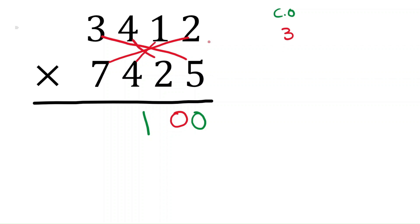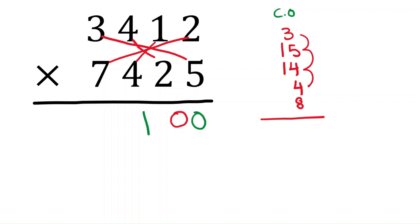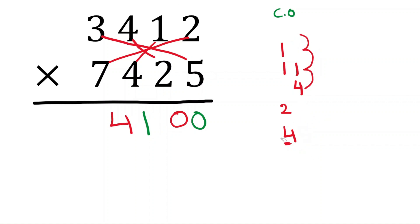Five times three is fifteen, two times seven is fourteen, four times one is four, and four times two is eight. Adding all together with the carryover three: eight, twelve, sixteen, twenty-four, plus two is twenty-six — write four in the answer. Four will be the carryover going forward.